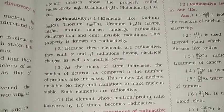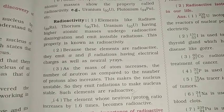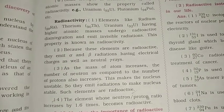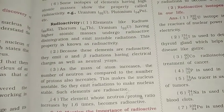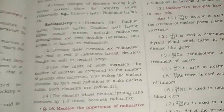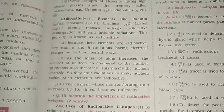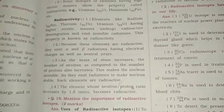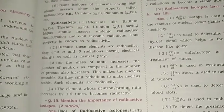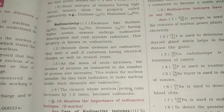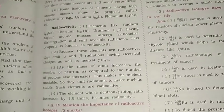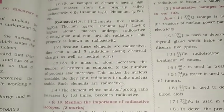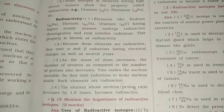Because these elements are radioactive, they emit alpha and beta radiation which carry electric charge, as well as neutral gamma rays — these are emitted during radioactive decay.